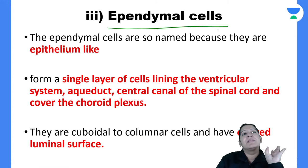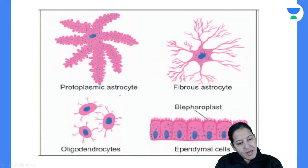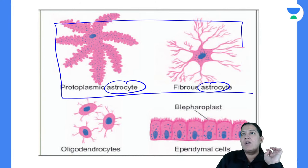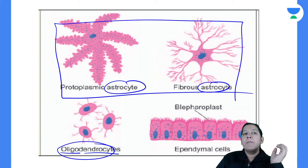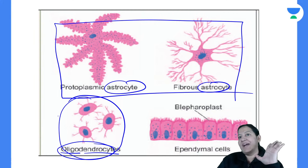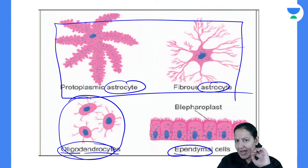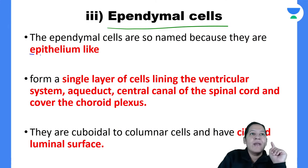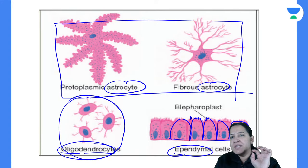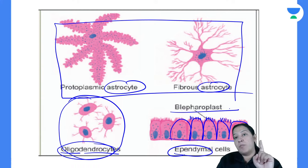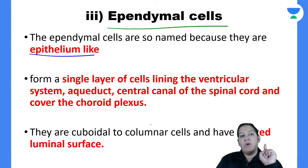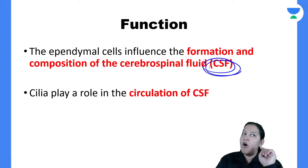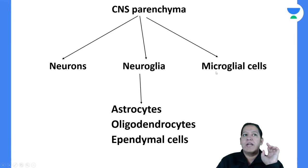Ependymal cells are named because they look like epithelium. They have a ciliated surface — the cilia are known as blepharoplast. Their main function is the formation and composition of CSF. So in summary: astrocytes do gliosis (scar formation), oligodendrocytes form myelin, and ependymal cells form CSF.